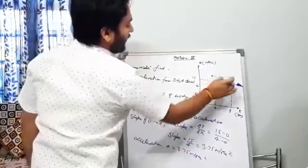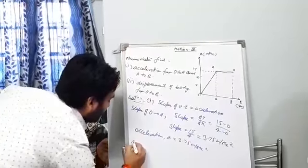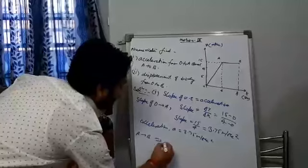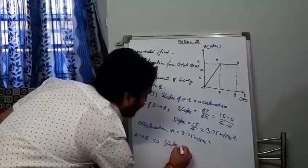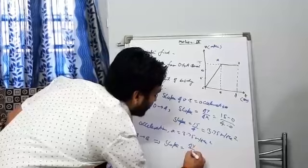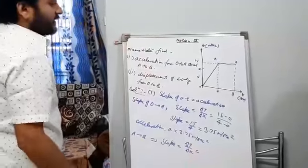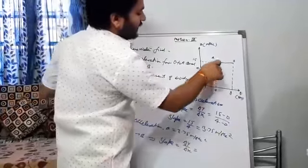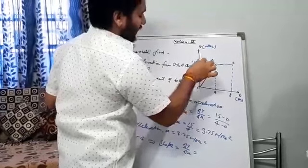Now I am going to solve the second part, that is A to B. This particular slope equals to, again, change in vertical axis upon change in horizontal axis. Change in vertical axis at A, velocity is 15, at B, velocity is 15.